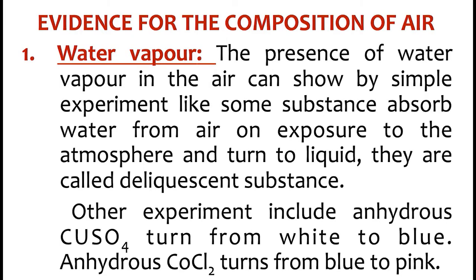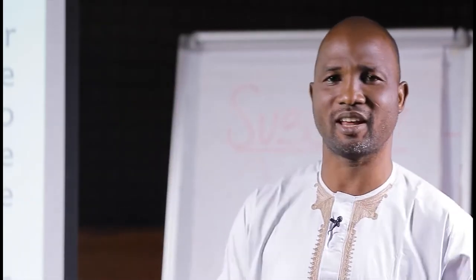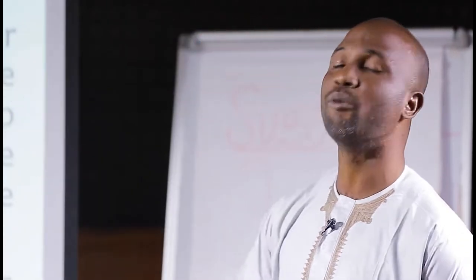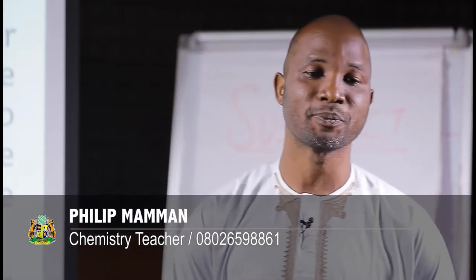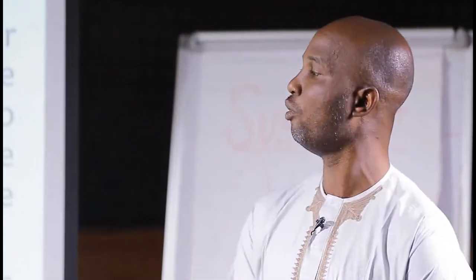Now we are looking at the evidence for the composition of air. Somebody will say, why do you say that air contains water vapor? Or how do you know that air contains nitrogen or carbon dioxide? So these are some of the activities that you carry out to show these are components of air. The presence of water vapor in air can be shown by simple experiments, like substances that absorb water from air on exposure to the atmosphere and turn into liquids. They are called deliquescent substances. For example, sodium hydroxide — if you leave sodium hydroxide in air, after a while it will change from solid state to liquid state, because it has absorbed moisture, which is water vapor from air.